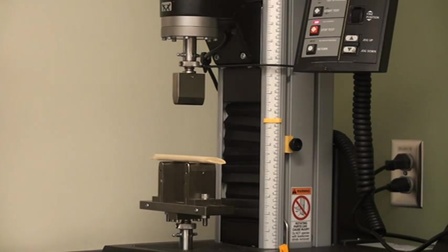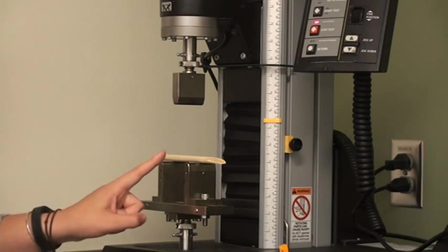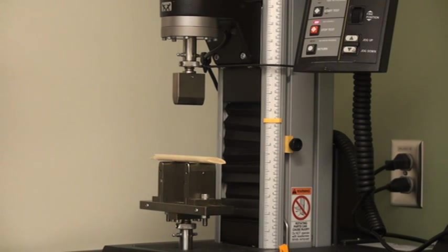Use the actuator to jog down until the upper anvil is just slightly above the sample, and then use the fine position knob to slowly lower the anvil until it is touching the sample and the desired tare load is achieved.